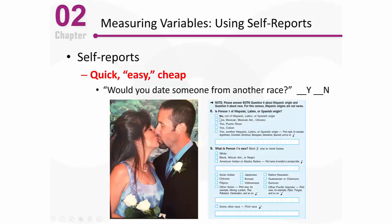The census says: 'Please answer both question 8 about Hispanic origin and question 9 about race — Hispanic origins are not races.' That's news to a lot of Hispanic people who consider Hispanic to be their race. My wife would go through the census and say she is Cuban, then get to the race question and not see herself as white or black. She'd click 'some other race' and write in 'Hispanic.' Measuring even seemingly simple things is very tough.